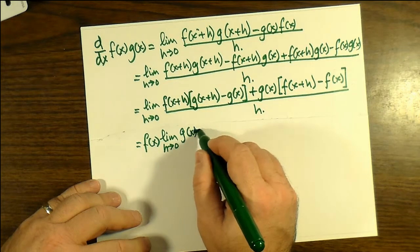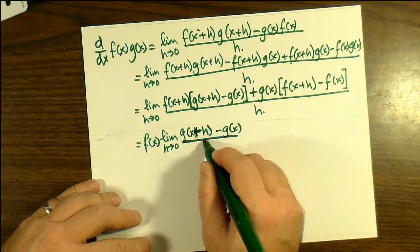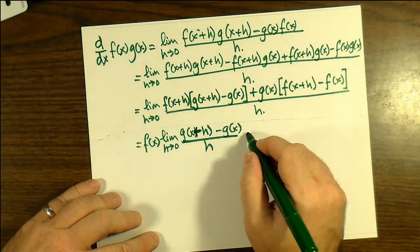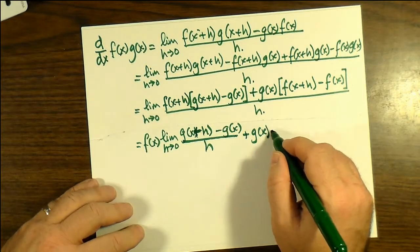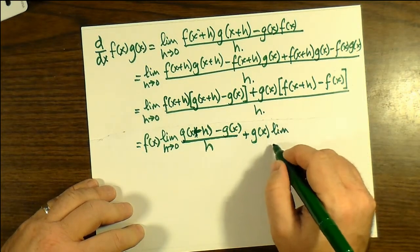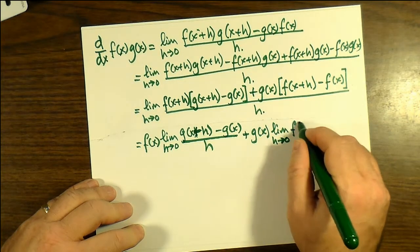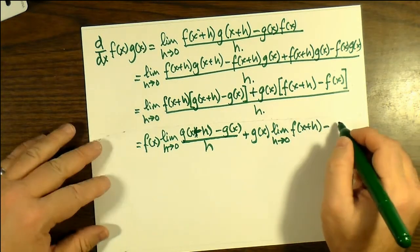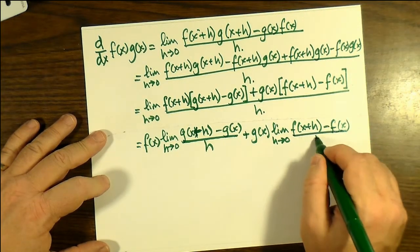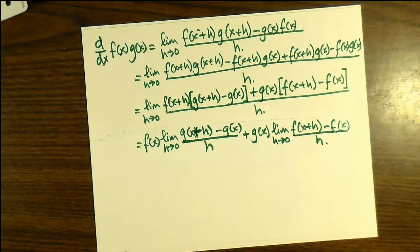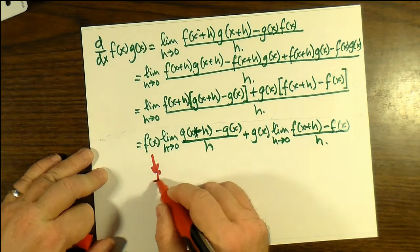Now the limit as h approaches zero of f(x+h) is just f(x), since x is a constant with respect to h. We can now take it outside the limit, leaving us with [g(x+h) - g(x)]/h, and then we're going to add g(x) outside the limit because g(x) is a constant, outside the limit as h approaches zero of [f(x+h) - f(x)]/h.